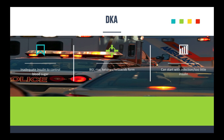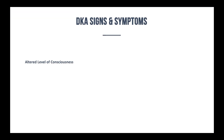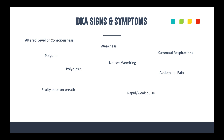Some of the signs and symptoms you'll see with these patients include basic stuff you'll see in a lot of diabetic patients: weakness, nausea, vomiting, and abdominal pain. We also talked about increased urine output — polyuria — and polydipsia, where the patient has increased thirst; they get very thirsty and want to drink a lot.